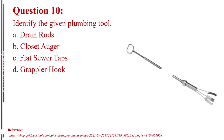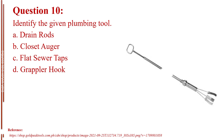Question number ten. Identify the given plumbing tool. Letter A, drain rods. Letter B, closet auger. Letter C, flat sewer taps. Letter D, grappler hook. The answer is Letter D, grappler hook.